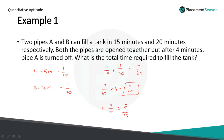The 1-minute work of B is 1 by 20, and it works for some N minutes to fill 8 by 15 of the work. Simplifying, N equals 8 into 20 by 15, which gives N equal to 32 by 3, or 10 and 2 by 3 minutes. It requires 10 and 2/3 minutes to fill the remaining tank.